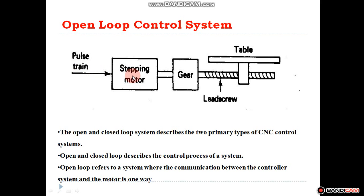In a simple diagram, we can explain the open loop control system. A stepper motor is connected to a transmission system, that is a gearbox, which is connected to a lead screw on which the table moves. The circular motion of the lead screw is converted to the linear motion of the table in the forward or reverse direction. To obtain linear motion, pulses are generated to rotate the motor to a certain angle, causing conversion of rotary motion into linear motion. Clockwise and anti-clockwise movement gives forward as well as reverse direction.